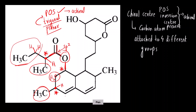Moving on: this carbon is sp2 — not chiral. This one is also sp2 hybridized — not chiral. Now this carbon: it has a methyl group, here there is CH, here there is an sp2 hybridized carbon, and there is one hydrogen — so this is also chiral. Now moving on to this carbon: here there is CH on one side and CH on the other side, so you might think the groups are the same and it is achiral — but is it actually achiral?